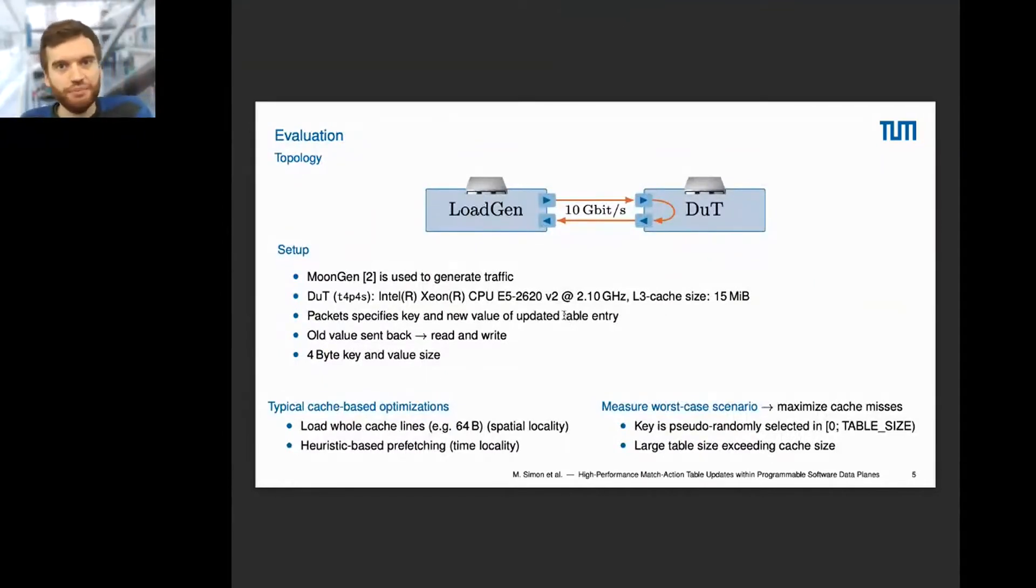For the evaluation, I'll quickly show our topology and setup. We have a load generator using MoonGen to generate traffic. The goal is with each packet which is processed at the device under test, one table entry is changed. The load generator generates packets specifying the key and the new value of the updated table entry. The device under test, TAPAS, performs this update and sends back the old value. This way we have a read and write operation with every packet. We use a four-byte key and value size.